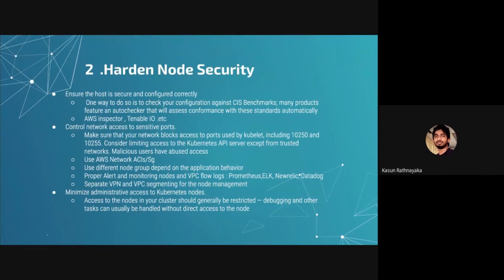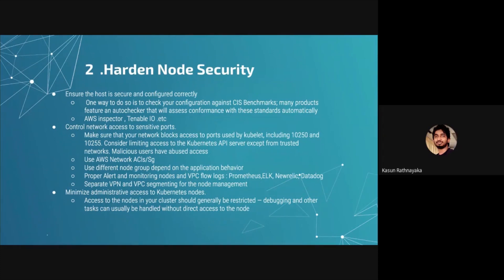Always restrict access, especially for administration. In a DevOps case, you don't need to give developers access to managed nodes. Make sure you tidy up access from the main nodes and masters. You can use AWS CloudTrail and AWS VPC logs for monitoring — along with tools like Prometheus, New Relic, or Datadog depending on your requirement and budget — to monitor access levels and who is accessing what and when. Make sure everything is recorded somewhere so you can identify what happened and when.